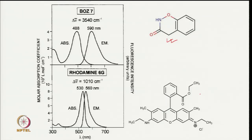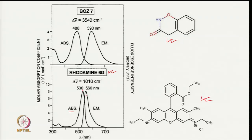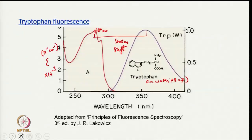Looking at another molecule with many aromatic rings and conjugated systems — these are typical fluorophores. This molecule is Rhodamine 6G. It absorbs at 530 nanometers and emits at 560 nanometers. So delta lambda is 30 nanometers and delta nu-bar is 1010 cm⁻¹ for Rhodamine 6G. That is the Stokes shift for Rhodamine 6G.